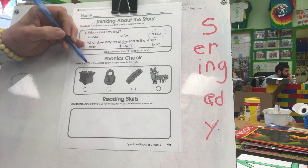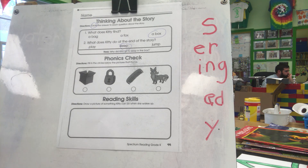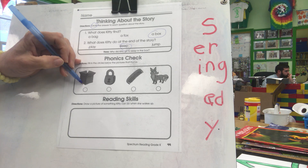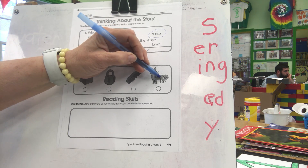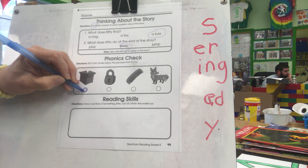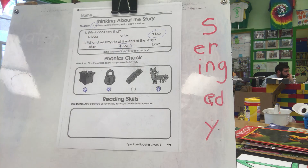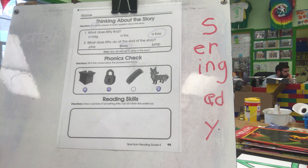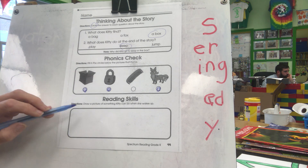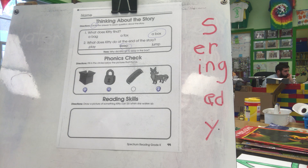The directions say fill in the circles below the pictures that rhyme — we need two rhyming ones or maybe more. We have a box, a fox, and locks. Not comb. A box, a fox, and something that locks — they're all rhyming. Now you get to draw a picture of something Kitty can do when she wakes up. I can't wait to see your pictures.